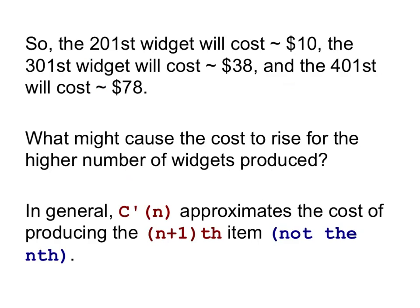And so we're going to be exploring a lot of these issues. But in general, to sum up this first portion of the lecture, let's remind ourselves that C'(n), the derivative of the cost function, approximates the cost of producing the next item. We'll call that the (n+1)th item, not the nth. So when you plug 200 into the marginal cost function, you're approximating how much it would cost to produce the 201st item. When you plug a 7 into the marginal cost function, you're approximating the cost to produce the 8th item, the 8th widget. We'll discuss this more in the next video.